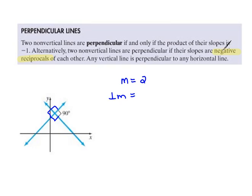perpendicular lines have negative reciprocal slopes. So, the negative meaning the opposite sign. So, this sign is positive, so my perpendicular slope would have to be negative. And then we have to do the reciprocal. So, instead of 2, it would be 1 half.